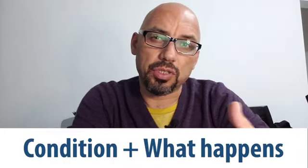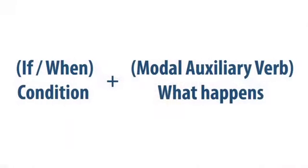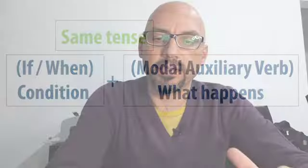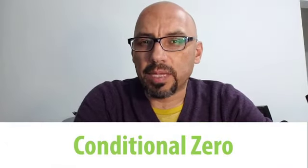The condition and what happens as a result. You're going to use two parts that are essential: the part where you use if or when to express the condition, and another part with a modal auxiliary verb to express what happens. The idea is that you use the same tense in both parts.